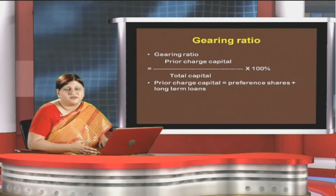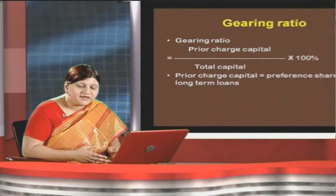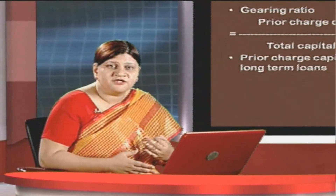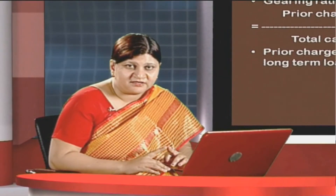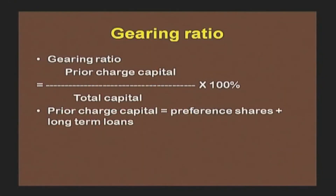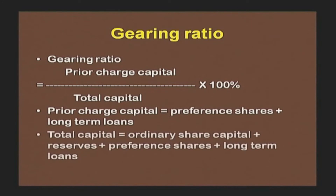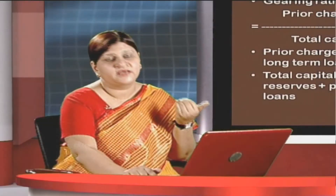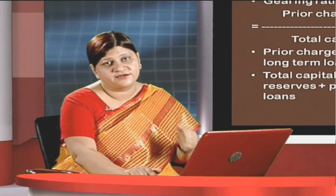Prior charge capital is worked out and then its ratio to total capital is ascertained — meaning how much prior charge capital exists in relation to total capital. Total capital means ordinary share capital (equity share capital) plus reserves plus preference shares plus long-term loans. Those figures are substituted under the gearing ratio formula to ascertain the gearing ratio.